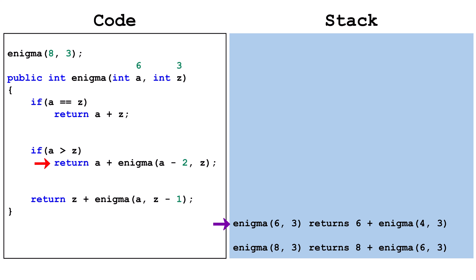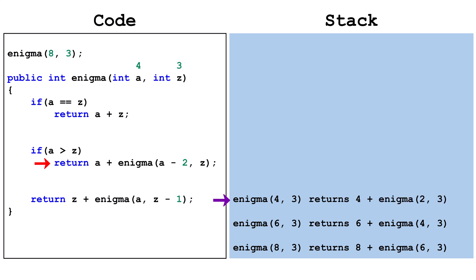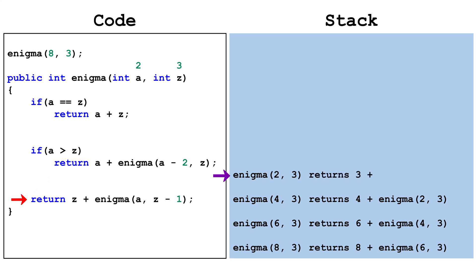enigma(2, 3) is pushed onto the stack. a equals z is false, so we continue on. a greater than z is true, so this frame will return 4 plus whatever is returned by enigma(2, 3). enigma(2, 3) is pushed onto the stack. a equals z is true — we've reached a base case and returned 4. This frame is popped off the stack.